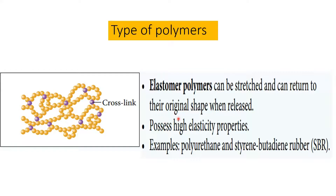The third type is elastomers — polymers that can be stretched and return to their original shape when released. They have high elasticity properties. Examples include polyurethane and styrene-butadiene rubber. Natural rubber from rubber trees produces a white liquid used to make products like pillows and mattresses.